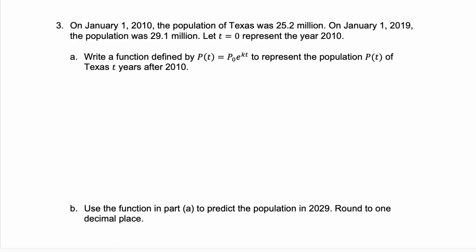Here we're talking about the population of Texas. On January 1, 2010, the population of Texas was 25.2 million. Then on January 1, 2019, the population was 29.1 million. Let t equals 0 represent the year 2010. In part A, we want to come up with the function p(t) equals p(0)·e to the k·t to represent the population of Texas t years after 2010.